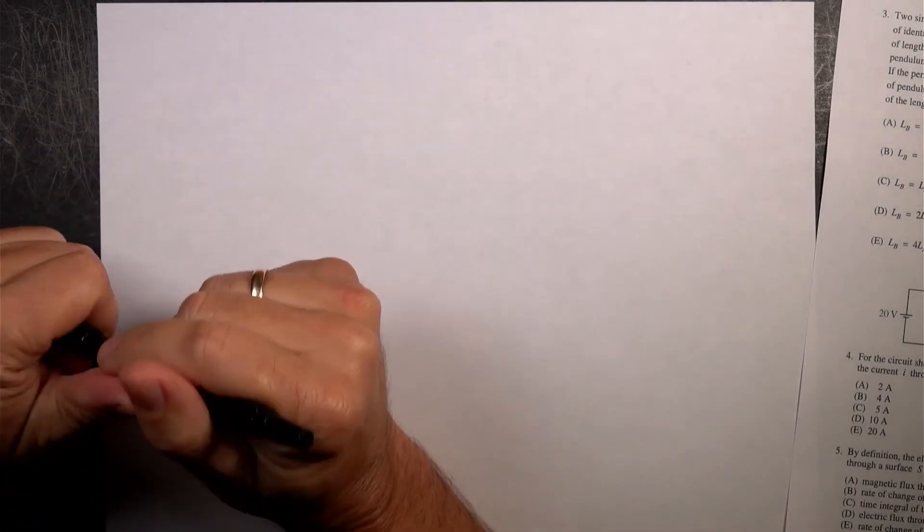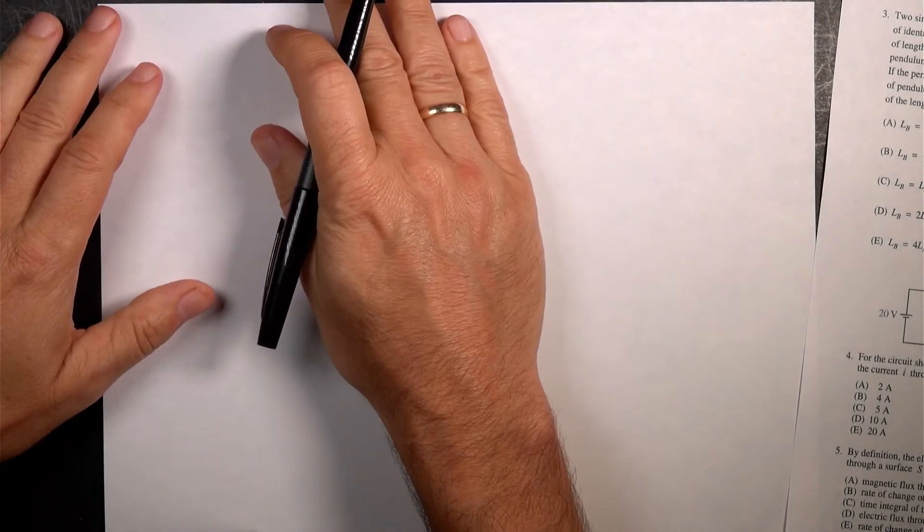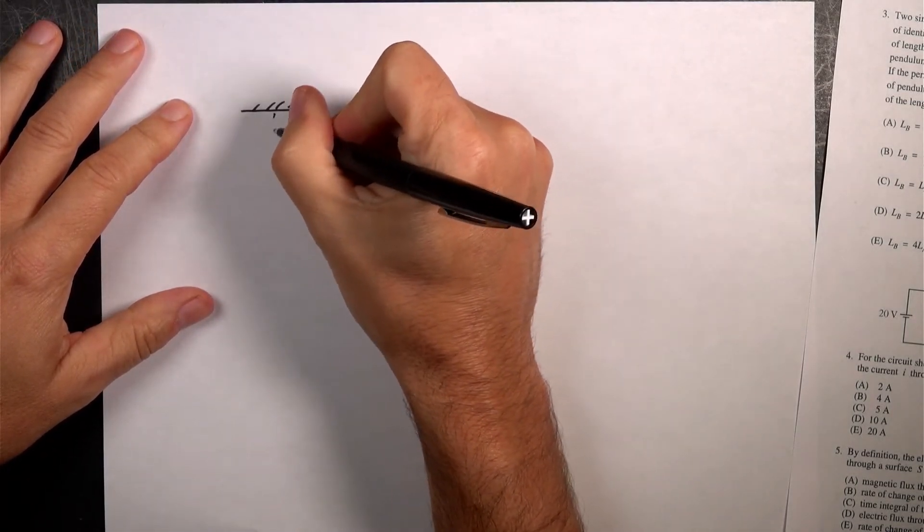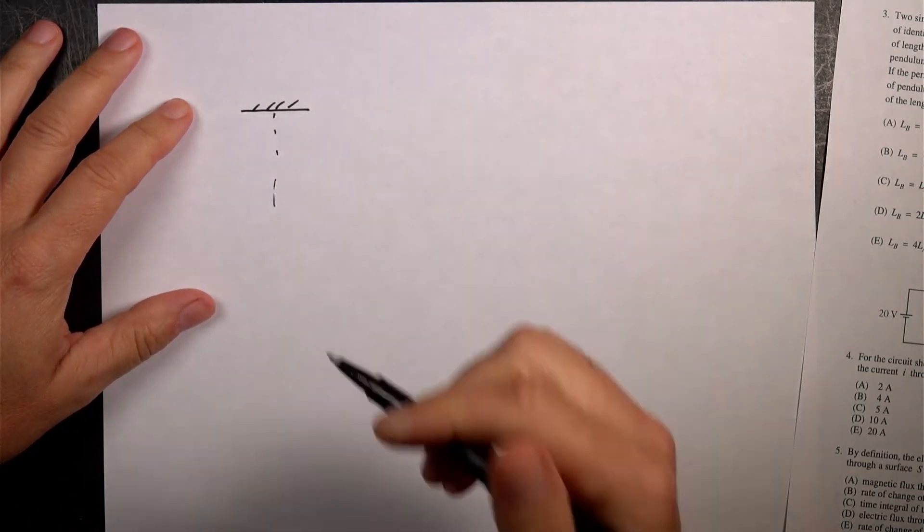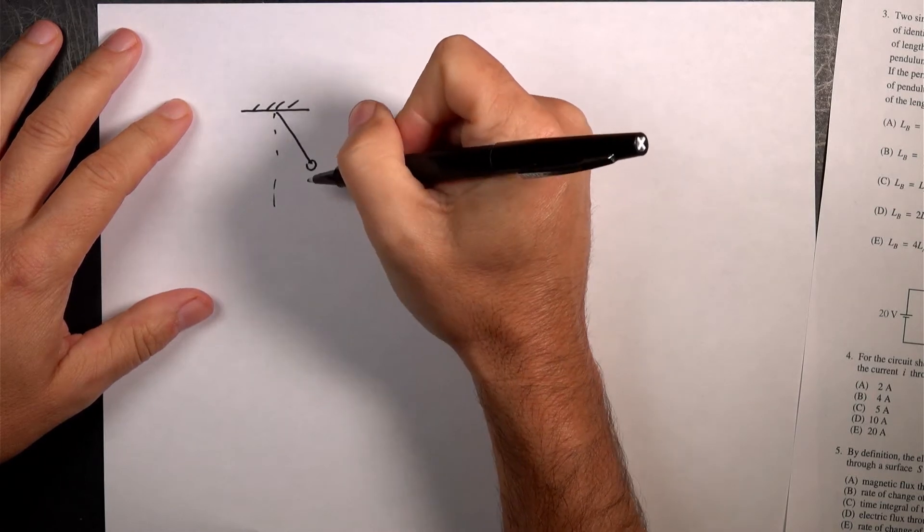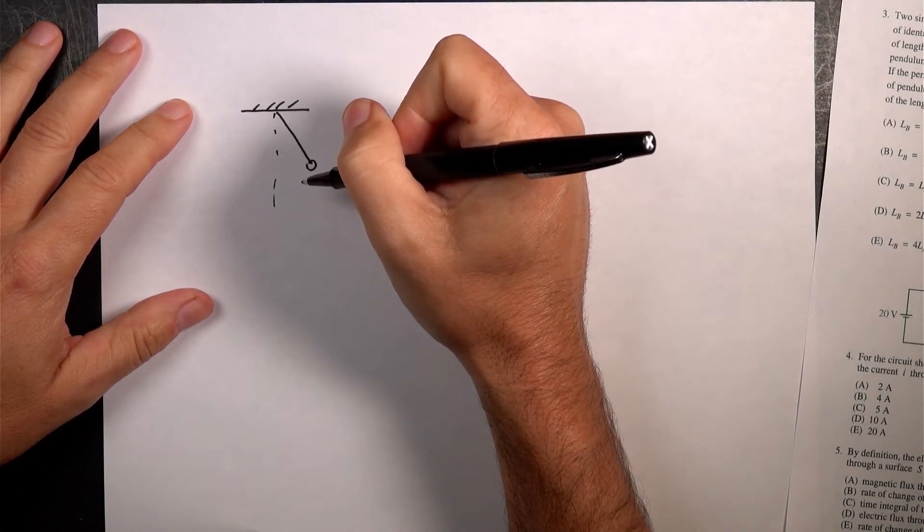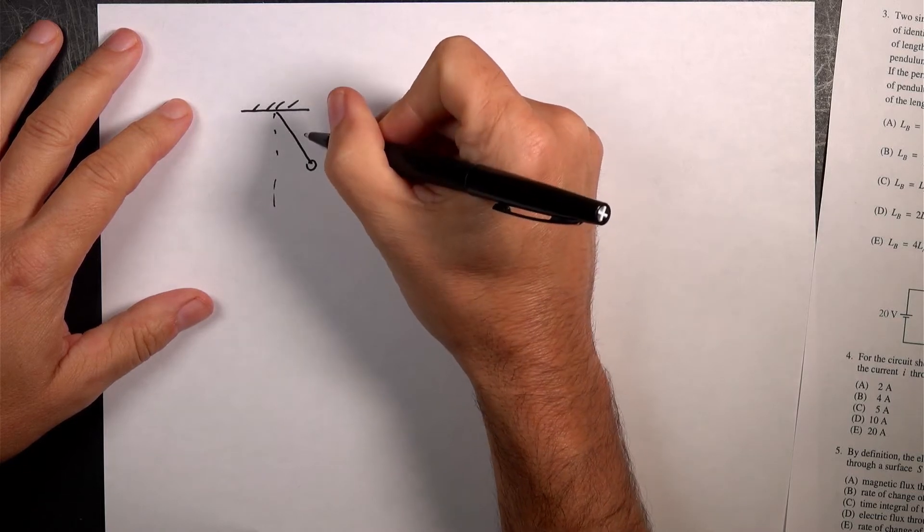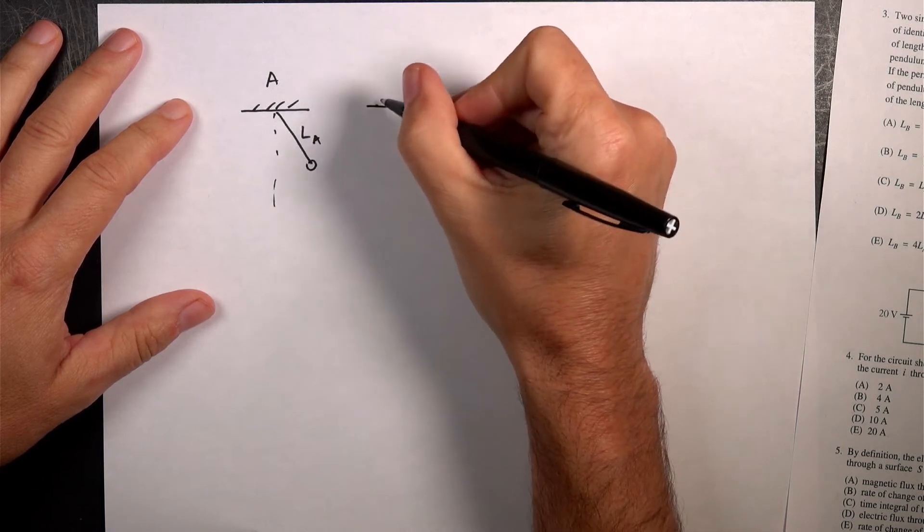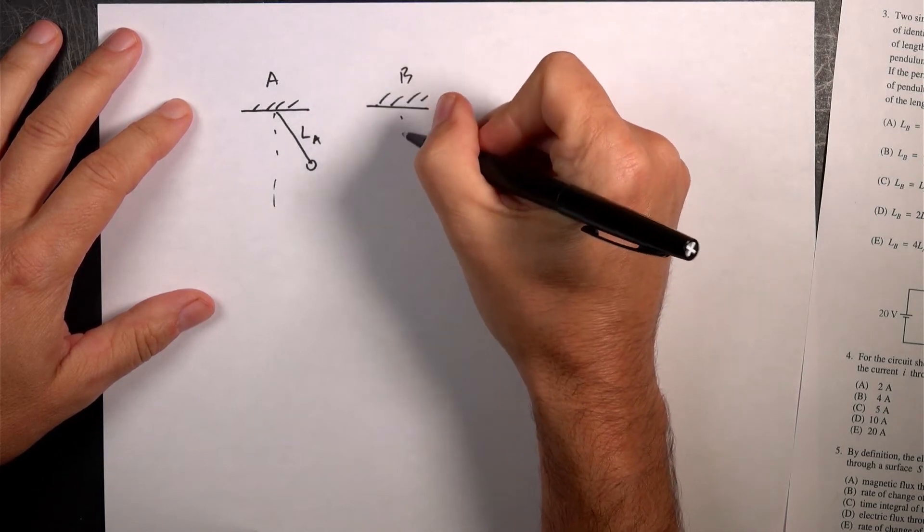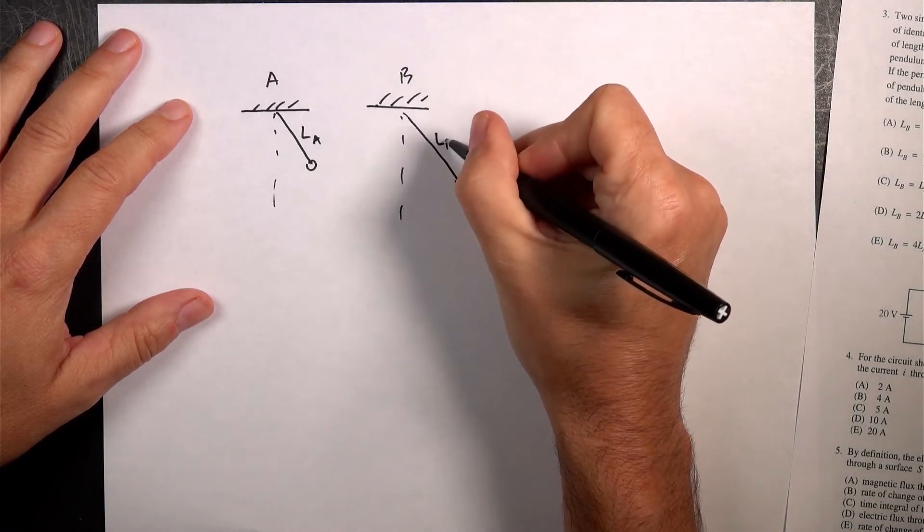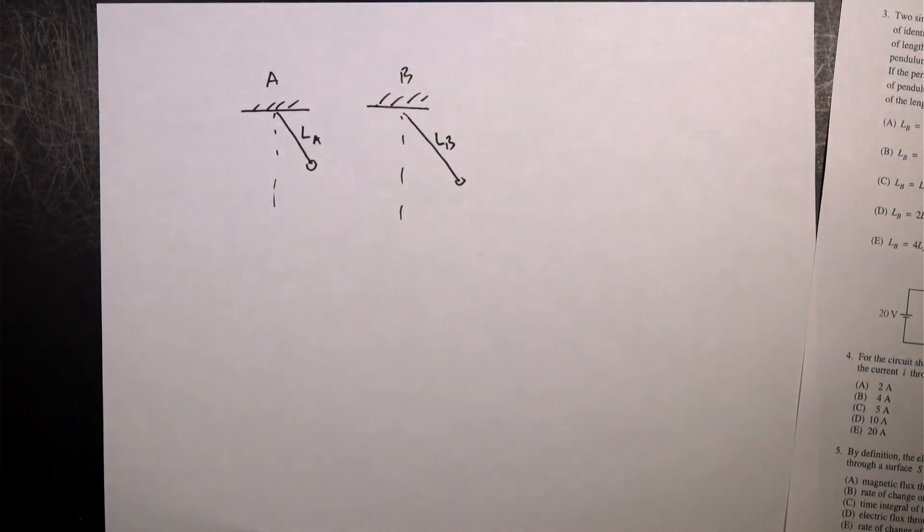So the lengths are different. Let's just draw a pendulum. Normally you have to do these questions fast, so I'm doing them slow. The period of A, okay, so we don't know the length. Let's just draw it at a different length, LB. Okay, so we know something about the period.